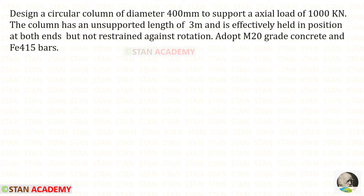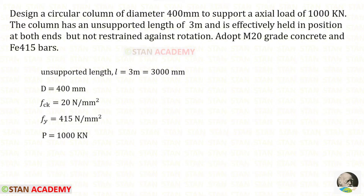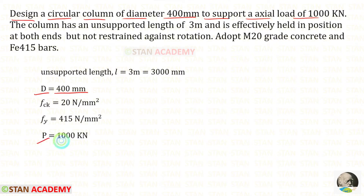Hello everyone. Today we are going to design an axially loaded short circular column. Let us read the question and write the given data. Design a circular column of diameter 400 millimeter to support an axial load of 1000 kN. The diameter D is given as 400 millimeter and the load P is given as 1000 kN.